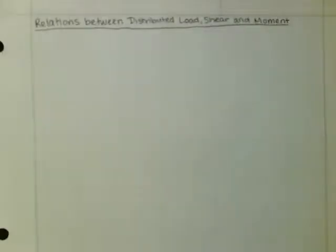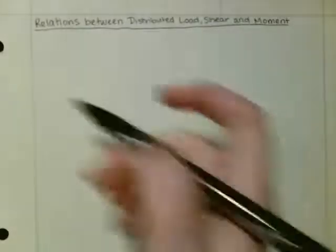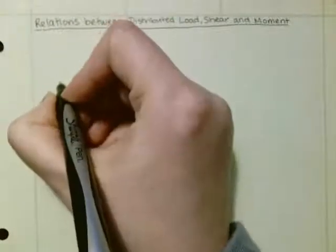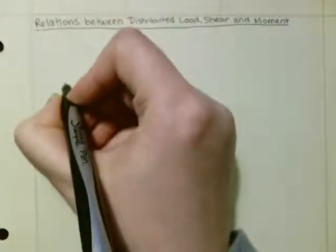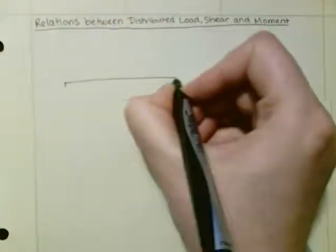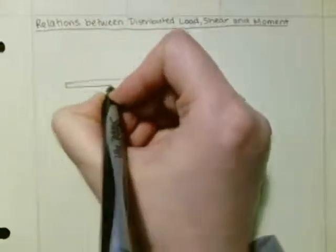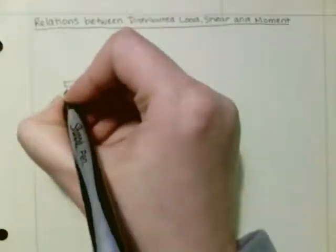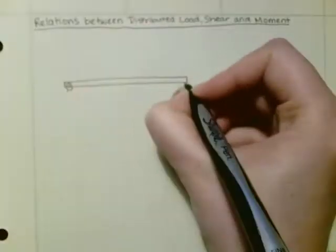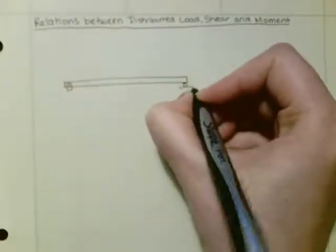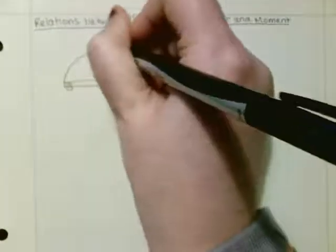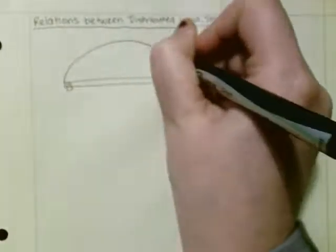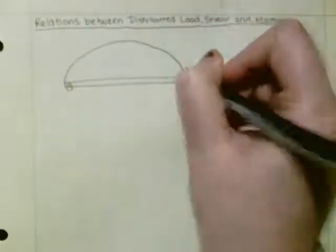This is relations between distributed load, shear, and moment. So let's say we have a simply supported beam with a distributed load that looks something like this.